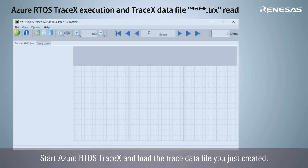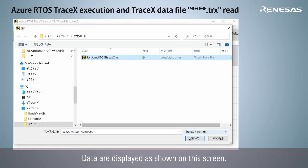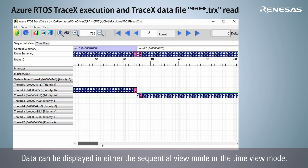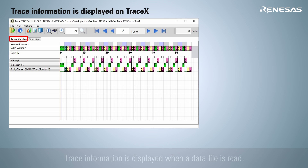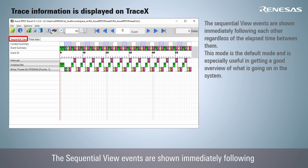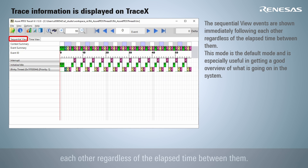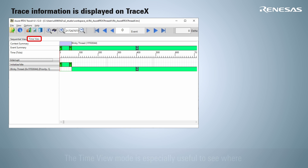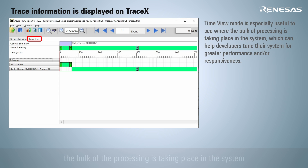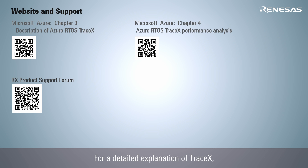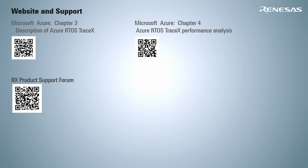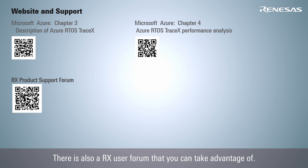Start Azure RTOS TraceX and load the trace data file you just created. Data are displayed as shown on screen in either the sequential view mode or the time view mode. Trace information is displayed when a data file is read. The sequential view shows events immediately following each other regardless of elapsed time, helping to get an overview of how the system works. Time view mode is especially useful to see where the bulk of processing is taking place, helping to tune the system for performance and responsiveness. For a detailed explanation of TraceX, please refer to the Microsoft website. There is also a Renesas RX user forum that you can take advantage of.